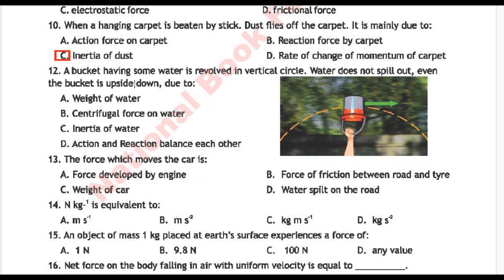Next question 11: A bucket having some water is revolved in a vertical circle. Water does not spill out even when the bucket is upside down, due to — Option A: weight of water, Option B: centrifugal force on water, Option C: inertia of water, Option D: action and reaction balancing each other. Correct answer is Option B: centrifugal force on water.